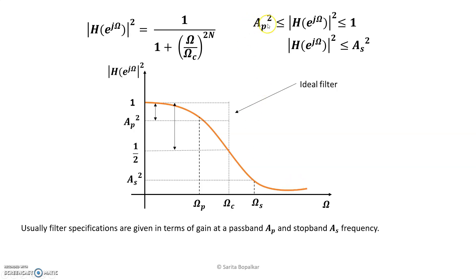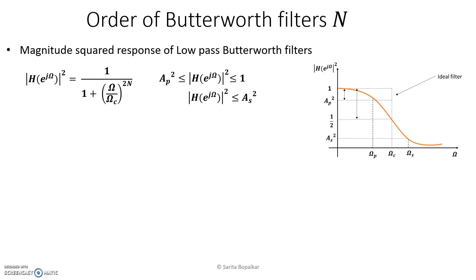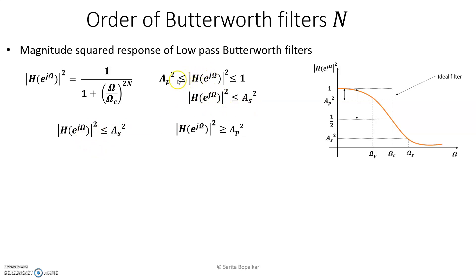Note that the magnitude specification can be given in different forms — it can be in the form of gain, that is ap and as, or sometimes in the form of attenuation. First, we will derive the formula where the magnitude specification is given in the form of pass band gain ap and stop band gain as. In the pass band, the magnitude square response is greater than or equal to ap², and in the stop band it is less than or equal to as².